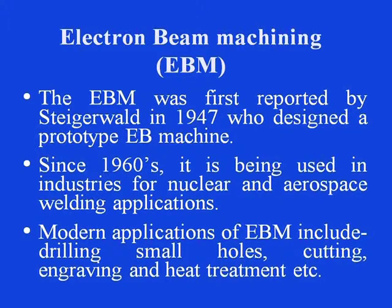Electron beam machining was first reported by Steggerl in 1947, who designed a prototype of this particular machine. Since the year 1960, it has been used in industries for nuclear and aerospace welding applications. However, modern applications of electron beam machining include drilling of small holes, precision machining of components, precision cutting, engraving and heat treatment. This process also finds applications mostly in semiconductor manufacturing as well as micro machining areas.